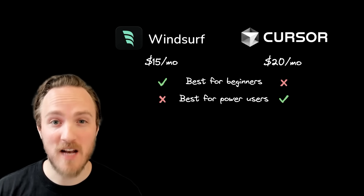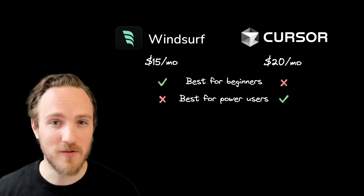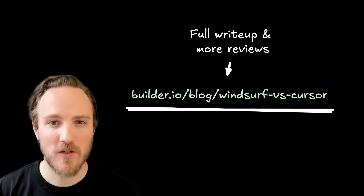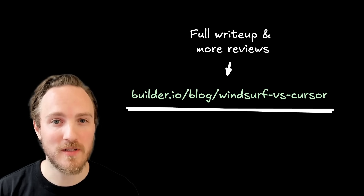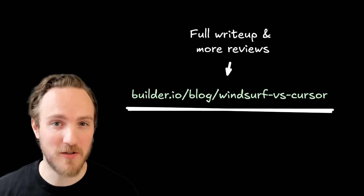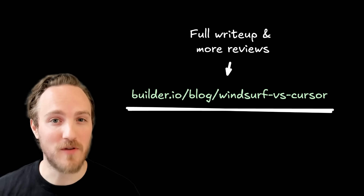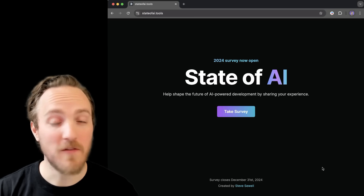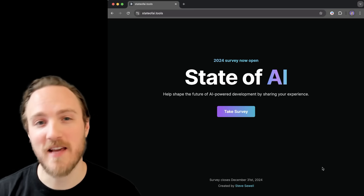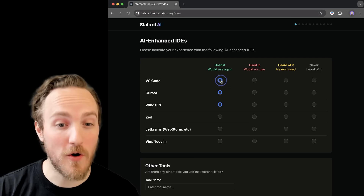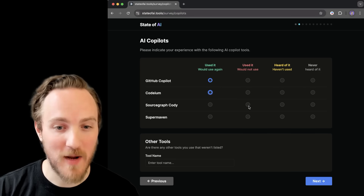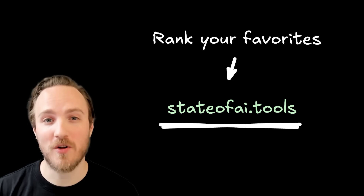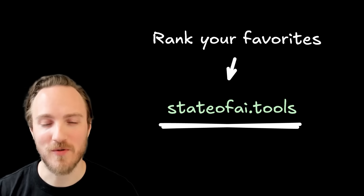Windsurf also has a lower starting price point, and if you're coming off a tool like Bolt.new, Windsurf will feel a lot more like what you're used to. But hey, that's just my opinion. To read my full in-depth review of both tools, head over to my latest blog post on the Builder.io blog — you'll find other reviews and rankings of AI tools over there. What's your favorite AI IDE? Check out the State of AI survey that just went live — you can vote on your favorite IDEs, copilots, chat tools, and more at stateofai.tools.